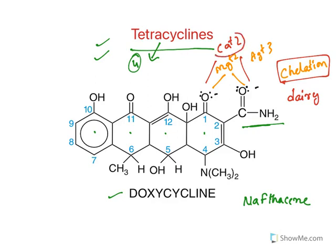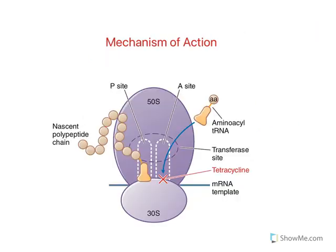Because of this chelation, these drugs should not be taken along with dairy products like milk, buttermilk, or curd. The calcium will chelate with tetracyclines and prevent absorption. Even antacids, which contain aluminum, will form chelates with tetracyclines, and so antacids should not be taken together with tetracyclines.